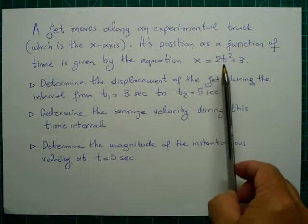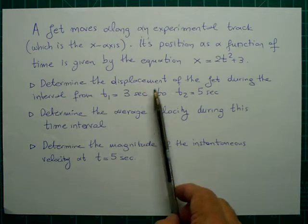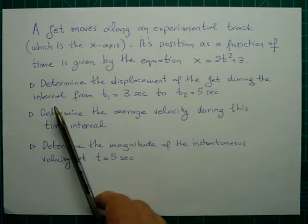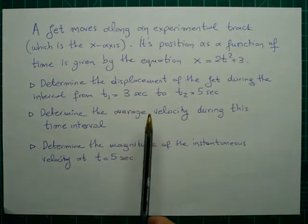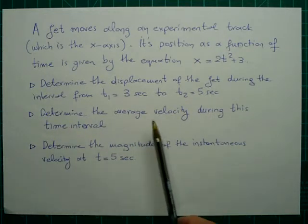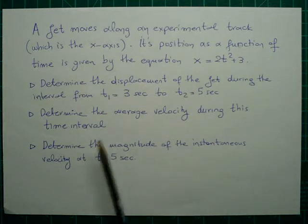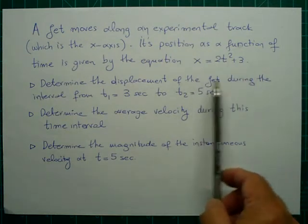equals 2 times t squared plus 3. Determine the displacement of the jet during the interval from t₁ = 3 seconds to t₂ = 5 seconds. Determine the average velocity during this time interval, and determine the magnitude of the instantaneous velocity at t equals 5 seconds. Okay, let's solve the problem.